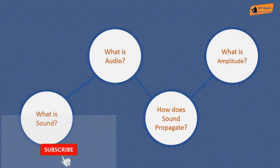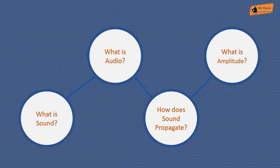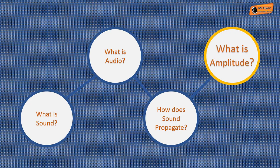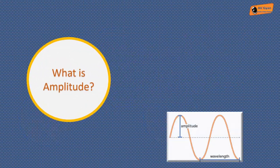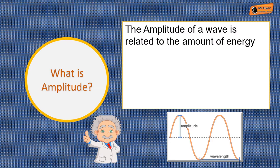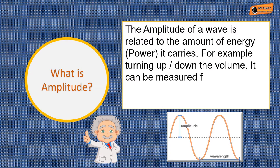Now let's proceed further and understand what is amplitude. You can see the diagram below. The amplitude of a wave is related to the amount of energy it carries — for example, turning the volume up or down. It can be measured from the rest position, that is zero position, to the crest, which is the maximum position, or from zero position to the minimum position.